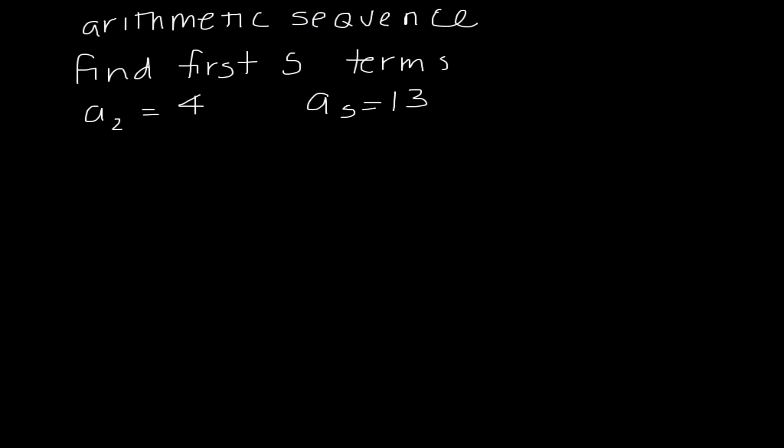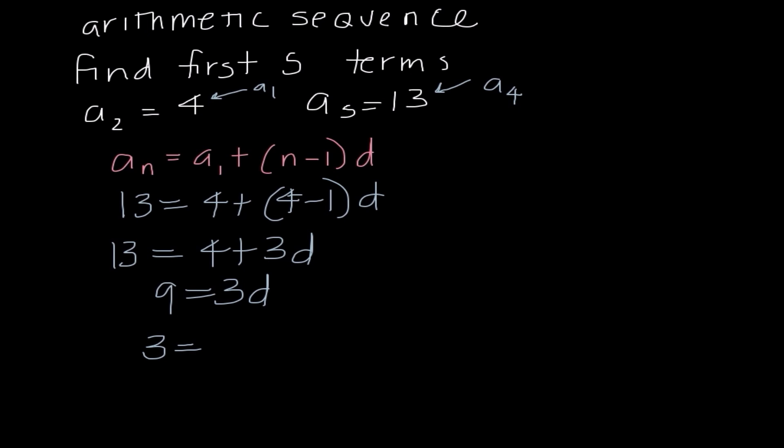Moving on now to arithmetic sequences. There are going to be some problems that are going to ask us to find the first five terms. In a problem like this, it's giving me my second term and my fifth term. What we really need to do is figure out what is our common difference. So we need to use our nth term formula, a sub n equals a sub 1 plus n minus 1 times d. We do not have a sub 1, so I'm going to temporarily say that 4 is a sub 1. And if I'm moving everything up one place in our sequence, then 13 becomes our fourth term. So I'm going to say 13 equals 4 plus 4 minus 1 times d. So 13 equals 4 plus 3d. When I subtract 4, I get 9 equals 3d. So 3 is our common difference.